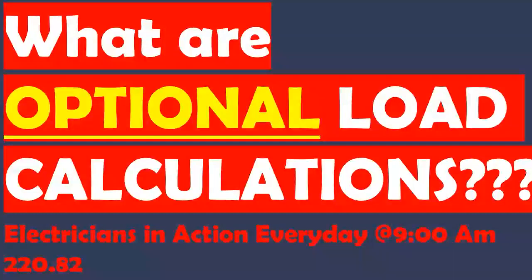Now there are some similarities between the standard method and the optional method, like the three VAs per square foot and things like that. But we do the appliances differently, we do the demand factors differently — it's a whole different process.